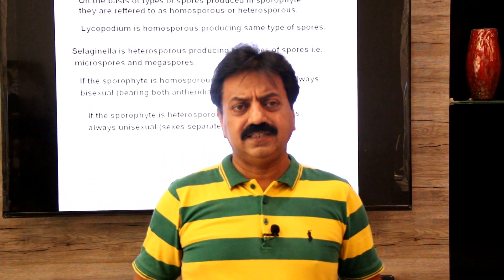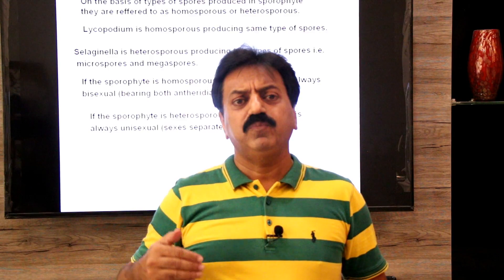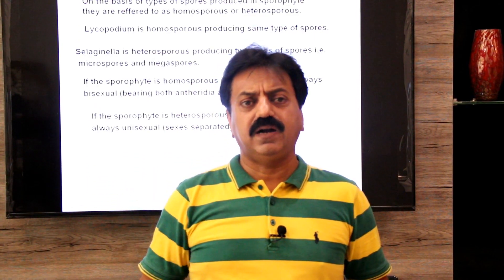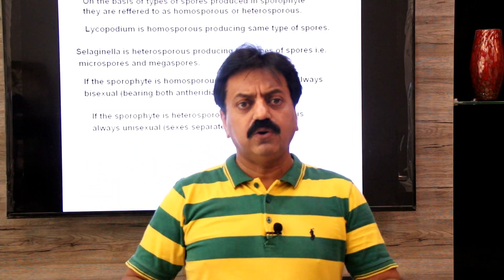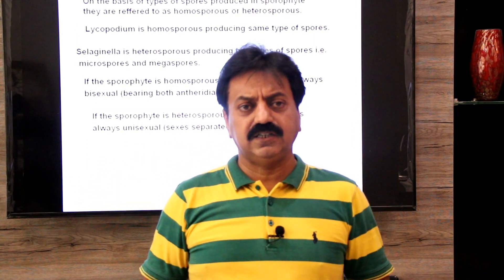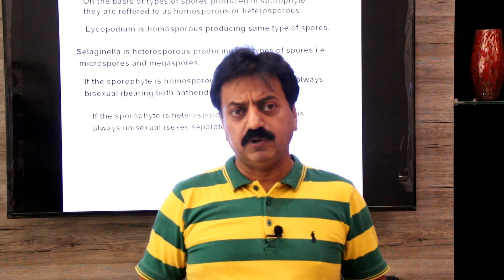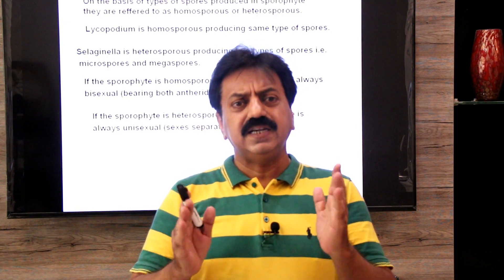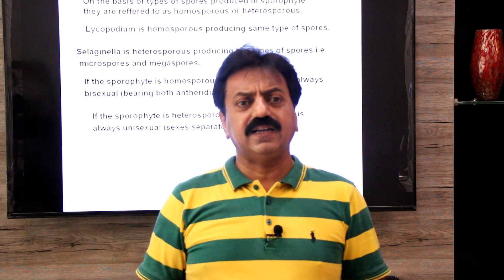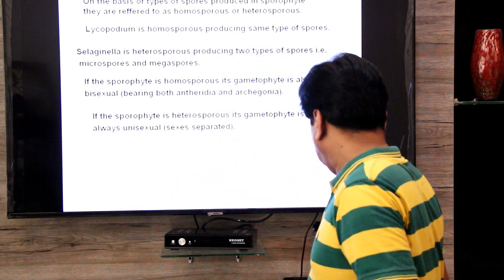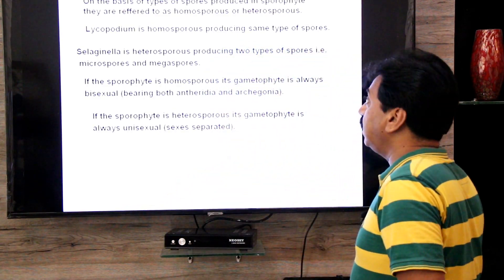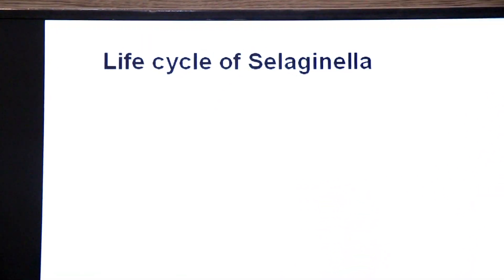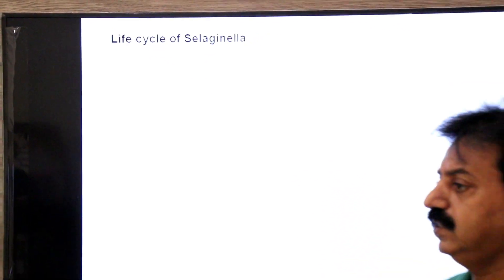Dear students, in today's class we discussed the general characteristics of Lycopsida — the main body of the plant is the sporophyte, and the reduced generation is the gametophyte. In this class a life cycle has been kept which we will study tomorrow. Our next topic will be the life cycle of Selaginella. Thank you dear students, wish you all the best.